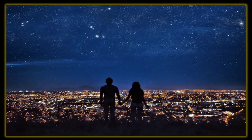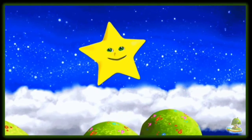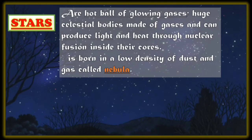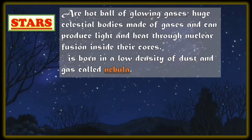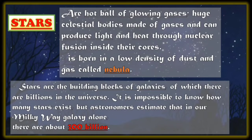On a clear night sky, far from city lights, you can see a bright sky. Billions of stars are in the sky, but they are too far to see. Some stars are farther away that our eyes cannot see them. Some stars are bright and some are faint. As you see the stars, you will see that they vary in color. Stars are a hot ball of glowing gases — huge celestial bodies made of gases that can produce light and heat through nuclear fusion inside their cores. A star is born in a low density of dust and gas called a nebula. Stars are also the building blocks of galaxies, of which there are billions in the universe.